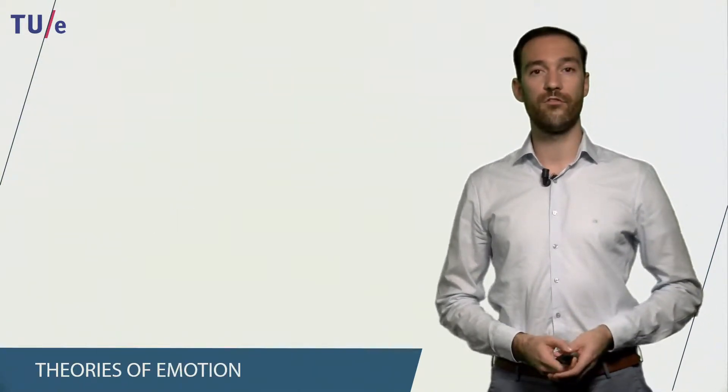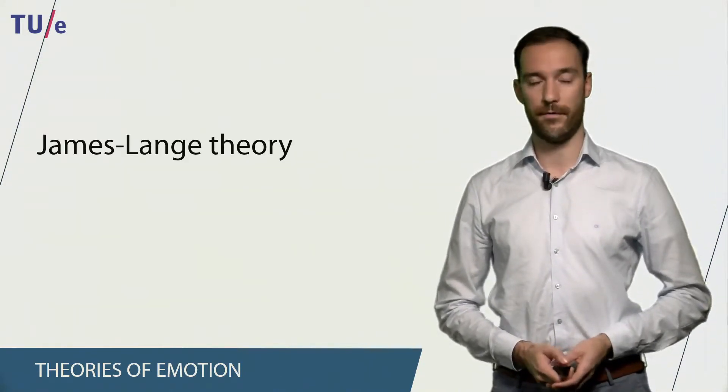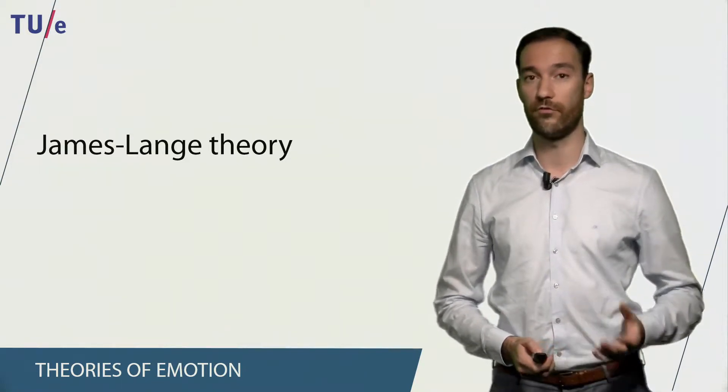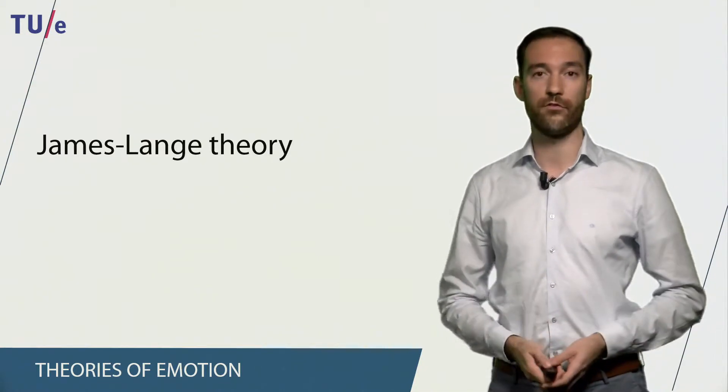We will start with showing a few theories of emotion. The first theory is called the James-Lange theory of emotion. This theory states that when we encounter an emotional stimulus, something happens to our physiology and we relate that to a certain emotion.